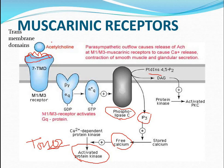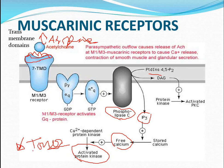If we introduce atropine — a classical anticholinergic drug — atropine will dislodge acetylcholine and come sit at the receptor, acting as an antagonist. Therefore, there will no longer be tone in the circular smooth muscle fibers.